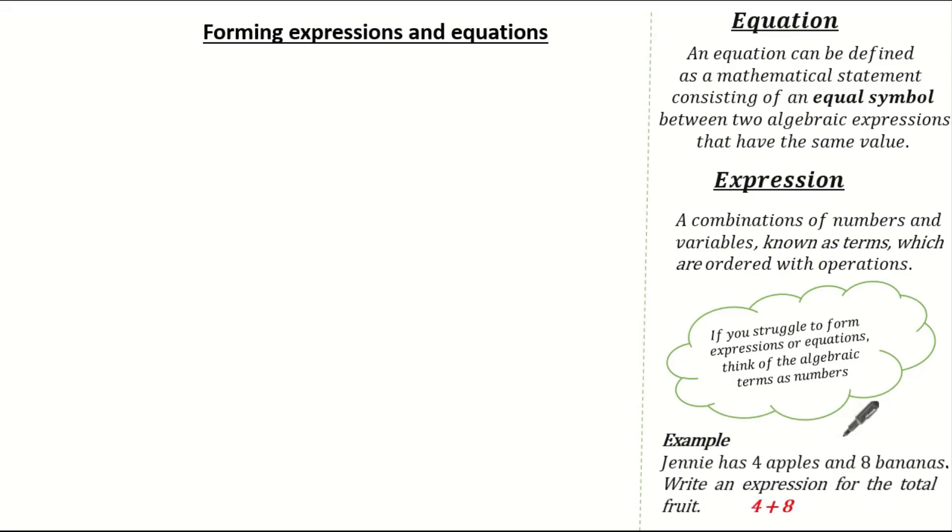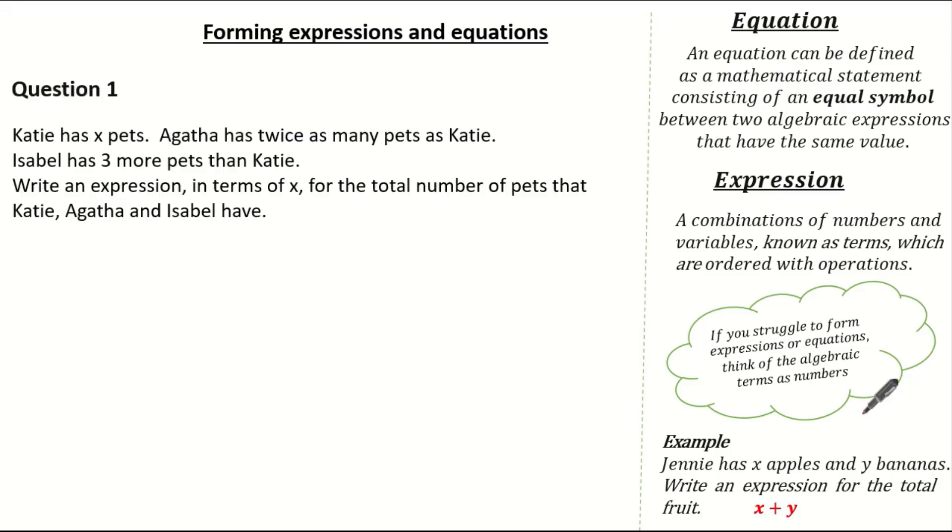Well if I had four apples and eight bananas, you could see the total fruit would be four add eight. And it's the same when you're talking about algebraic terms. If you have x apples and y bananas, it's simply x plus y for the total of fruit. So if you ever struggle, think about the operations you would apply if the terms were just normal numbers. So now we've gone through the key words, let's have a look at a past exam question.